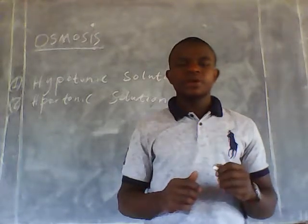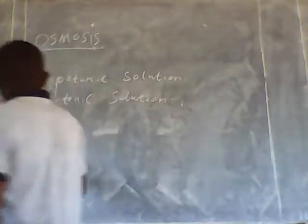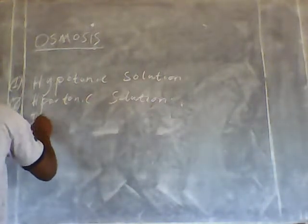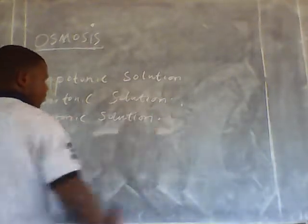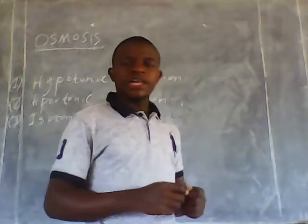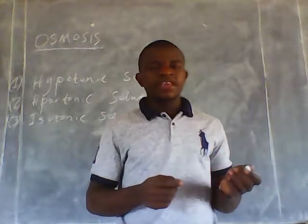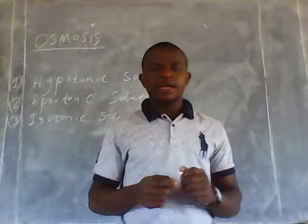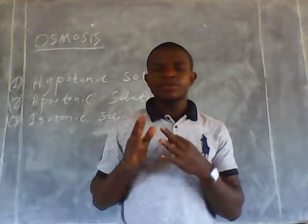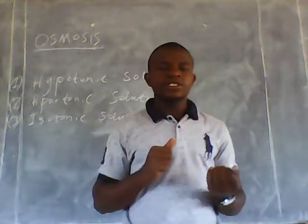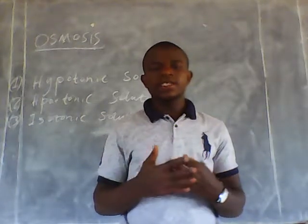Lastly, the solution I am going to talk about is the isotonic solution. This type of solution has an equal amount of water molecules to that of the cell and an equal amount of solutes to that of the cell. So if a cell is placed in an isotonic solution, nothing happens — there is no change that occurs.